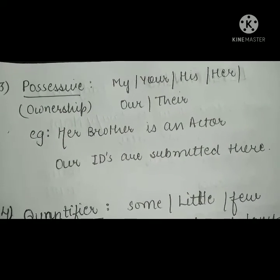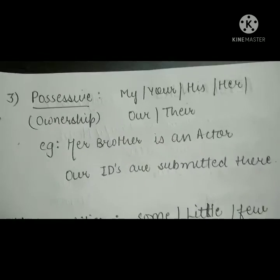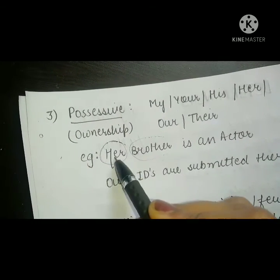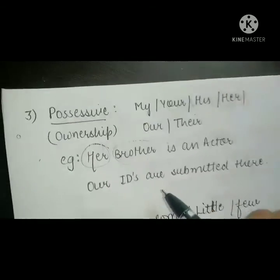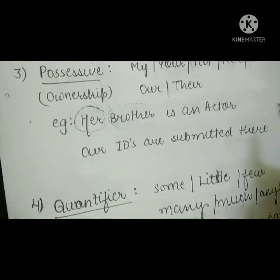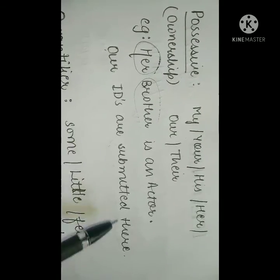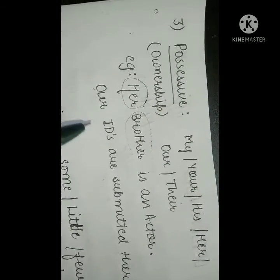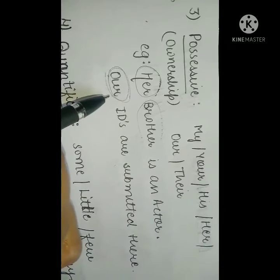'Her brother is an actor.' What is used here? Her — meaning his brother. This is our possession. Another example: 'Our IDs are submitted there.' What are we showing? We are showing possession. So 'our' here is your possessive determiner.